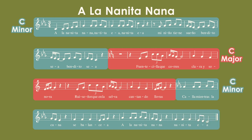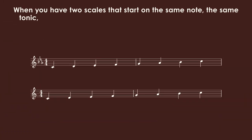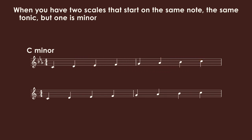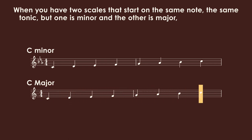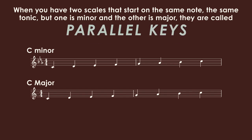The last section of the music returns to three flats and the C minor we saw in the beginning. So the music has this overall transition from C minor to C major back to C minor. When you have two scales that start on the same note — the same tonic — but one is minor and the other is major, they are called parallel keys. C minor is the parallel minor of C major, and every major scale has a parallel minor.